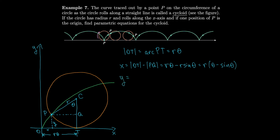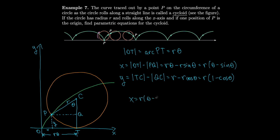For the y-coordinate, we take the distance from T to C — which is the radius r — and subtract the distance from Q to C, which is r·cos θ. This gives y equals r minus r·cos θ, or r(1 − cos θ). So the parametric equations for the cycloid are x equals r(θ − sin θ) and y equals r(1 − cos θ), where θ can be any real number.